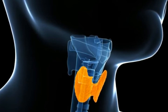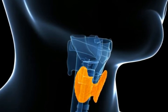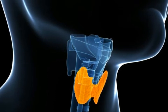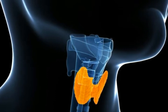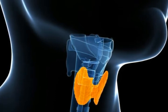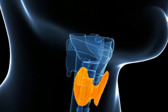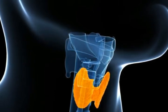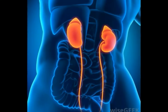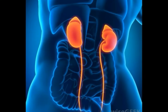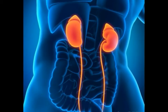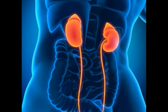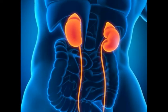An example of negative feedback in the endocrine system can be seen in the regulation of thyroid hormones. It starts with the brain's hypothalamus, which produces thyroid-releasing hormone, TRH. This hormone moves to the nearby pituitary gland, causing production of thyroid-stimulating hormone, TSH, which is then released into the bloodstream.